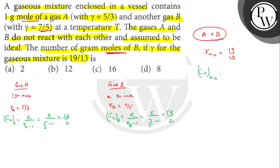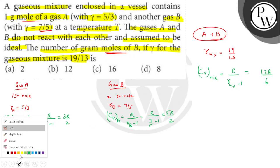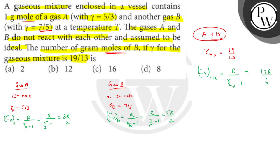Similarly, the Cv of the mixture is R divided by (gamma of mixture minus 1). Putting in the value, the answer will be 13R/6.